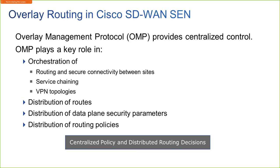OMP is really the heart of the overlay routing solution. It runs inside of the DTLS control plane connections, and it actually allows us to form peering relationships between our WAN edges and our V-Smart controllers. This is a protocol that's going to run between our V-Smart controllers and our V-Edge devices. We can have multiple DTLS tunnels between these V-Edge devices and the V-Smart controllers. The peerings are never made between the WAN edge devices — a V-Edge device is not going to talk to another V-Edge device with OMP.